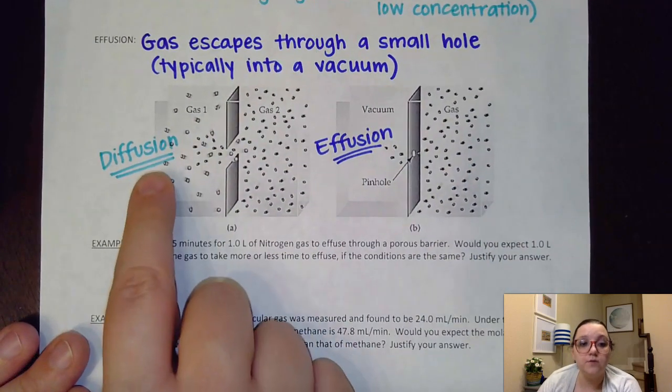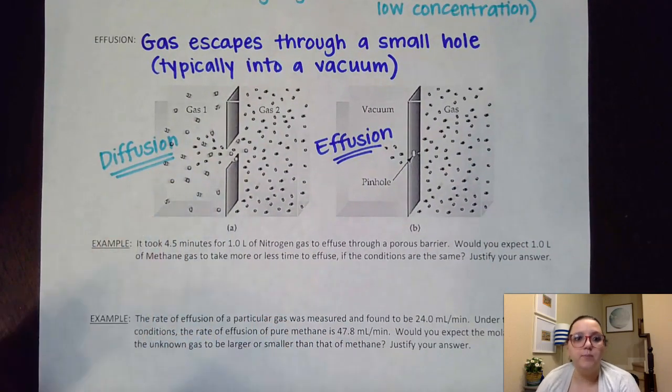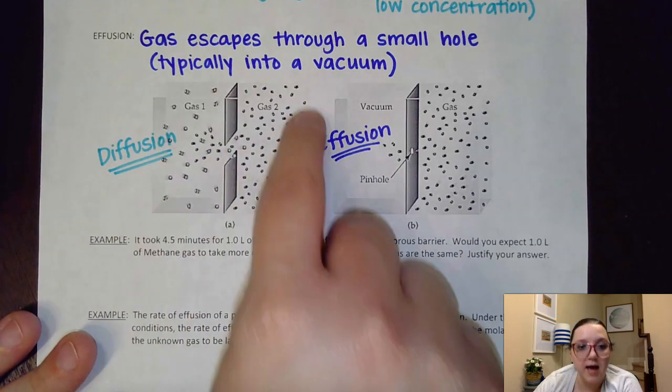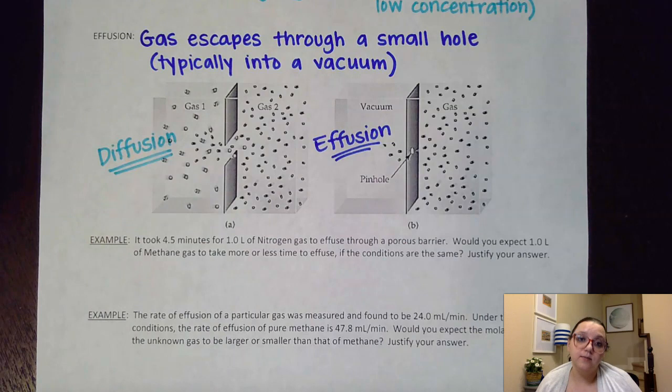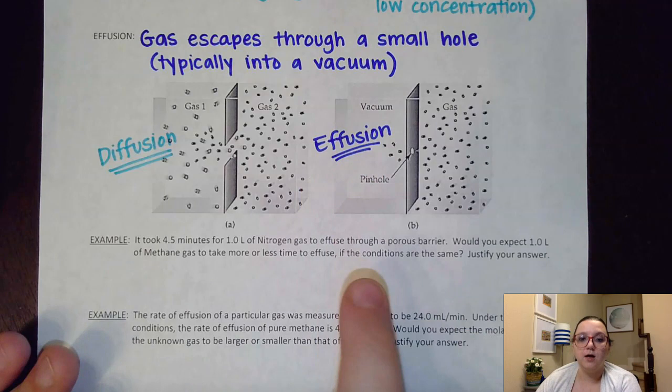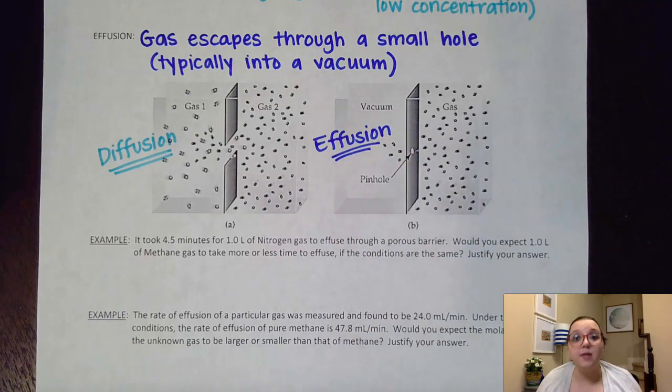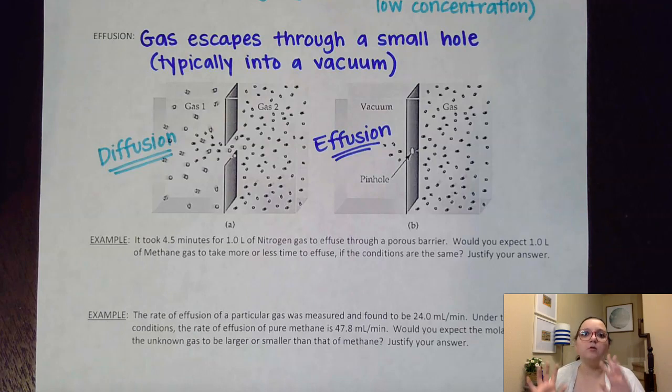The time it takes for diffusion and effusion to take place would be dependent on what size of gas particles I'm dealing with. So for example, here on diffusion, if I have bigger gas molecules that are moving slower, the time it takes for these gases to mix is going to be increased because they're moving a lot slower. Same thing with effusion here. If I'm trying to get this gas to escape out of this pinhole, if the gases are heavier and moving slower, they're going to take a lot more time to move and escape because those molecules are moving more slowly. So these two properties are greatly affected by Graham's law itself.